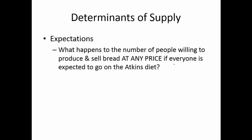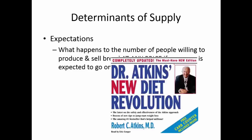And finally, expectations. What happens to the number of people willing to produce bread at any price if everyone is expected to go on the Atkins diet? The Atkins diet is an all-protein, no-carbs diet. So if everybody really embraced this, what would happen to demand for bread? Well, demand for bread would disappear. But foreseeing that demand is disappearing, what would bakery companies do? Would they continue operating? No — they would eventually have to shut down.